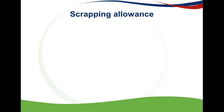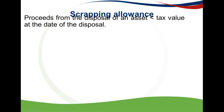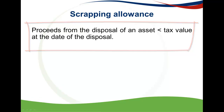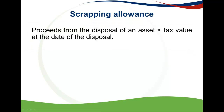The first one we're going to look at is a scrapping allowance. A scrapping allowance happens when the proceeds from the disposal of an asset is less than the tax value of the asset on the date of disposal. In other words, the selling price is less than the tax value — which equals the cost of the asset less any allowances on the asset.